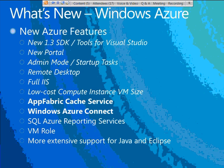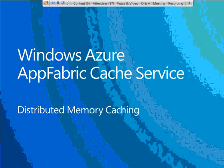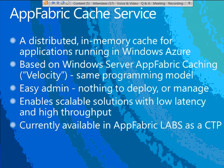The AppFabric Cache Service provides distributed memory caching — a distributed memory cache that your applications running in Windows Azure Compute can make use of. This is based on the Windows Server App Fabric caching feature, previously known as Velocity. They have the same programming model, so if you have code you've been using with Velocity on-premise, it should work fine with Windows Azure App Fabric Caching. One key difference is there's nothing to deploy, host, or manage — Microsoft takes care of the servers that implement the caching. It's currently available at Community Technology Preview.